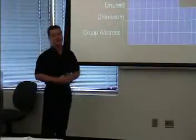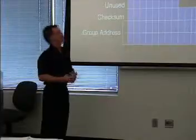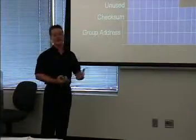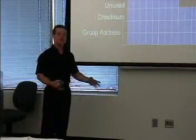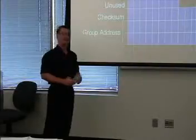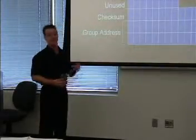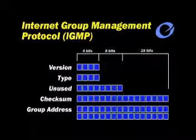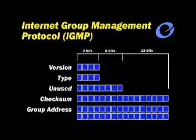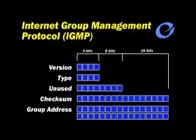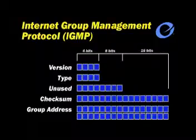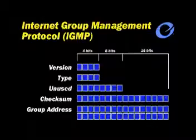IGMP, the internet group management protocol, is responsible for multicasting — communicating with a large number of hosts at one time with applications such as NetMeeting, instead of an individual target machine. Notice we have a checksum value, a group address which is a network ID used to communicate with a large number of hosts, and also we see the version, type, and how many unused bits are represented.